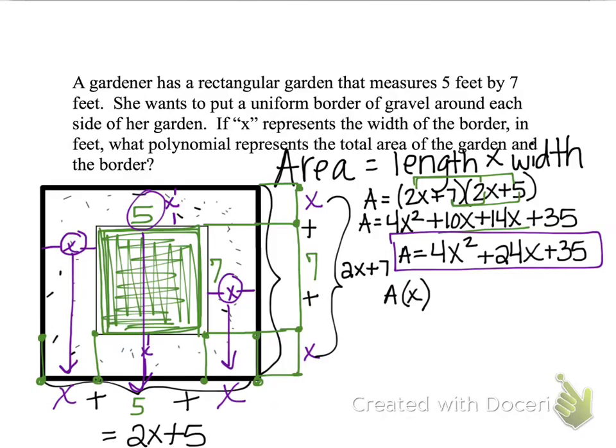We could just say the area as a function of X is 4X squared plus 24X plus 35. And notice that 35 at the end, that's the inside, which is the garden.